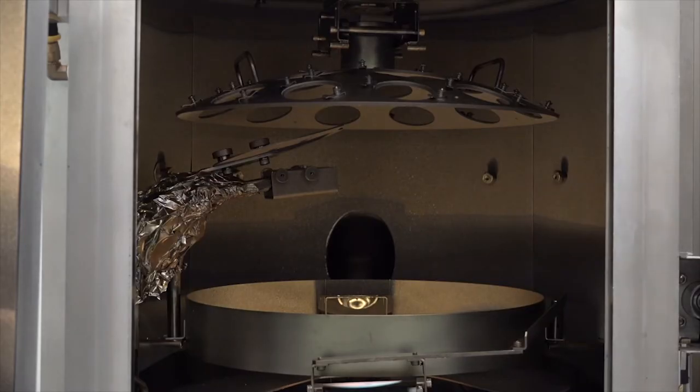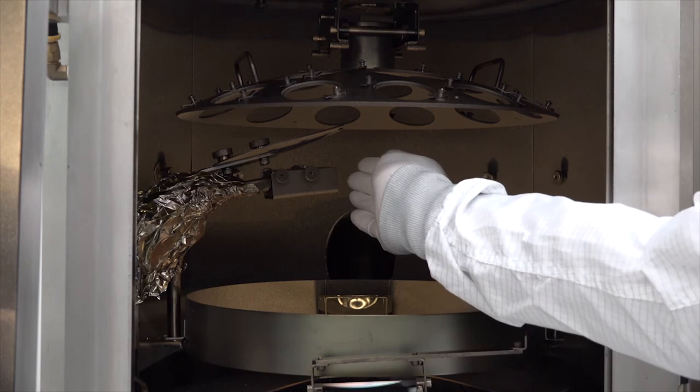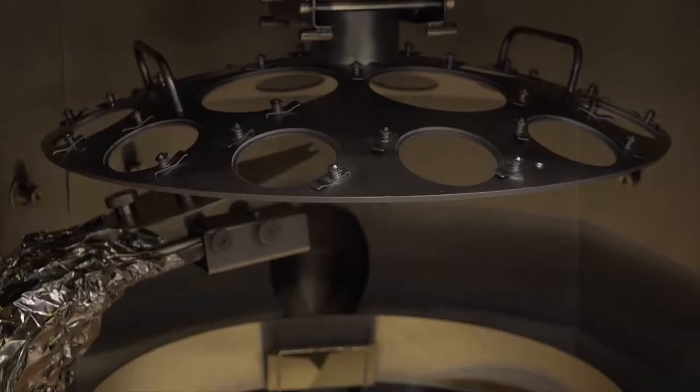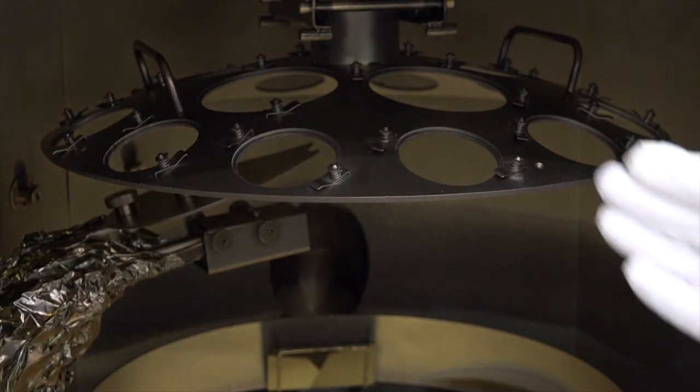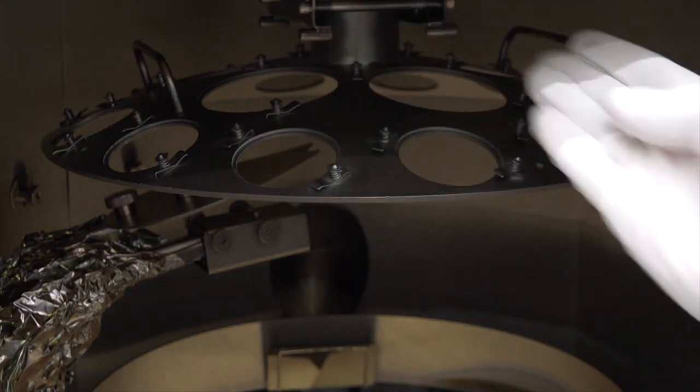The electron gun is located here. Remember, the electron gun is the source of the electron beam that heats the sample. And the sample is placed at the top of the chamber in this dome-shaped holder.